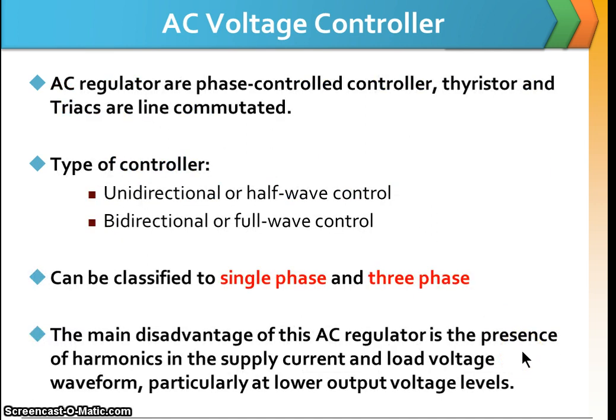AC regulators are phase control controllers. Triacs and thyristors are line commutated. Type of controller, they have also unidirectional or half-wave control, bidirectional or full-wave control.